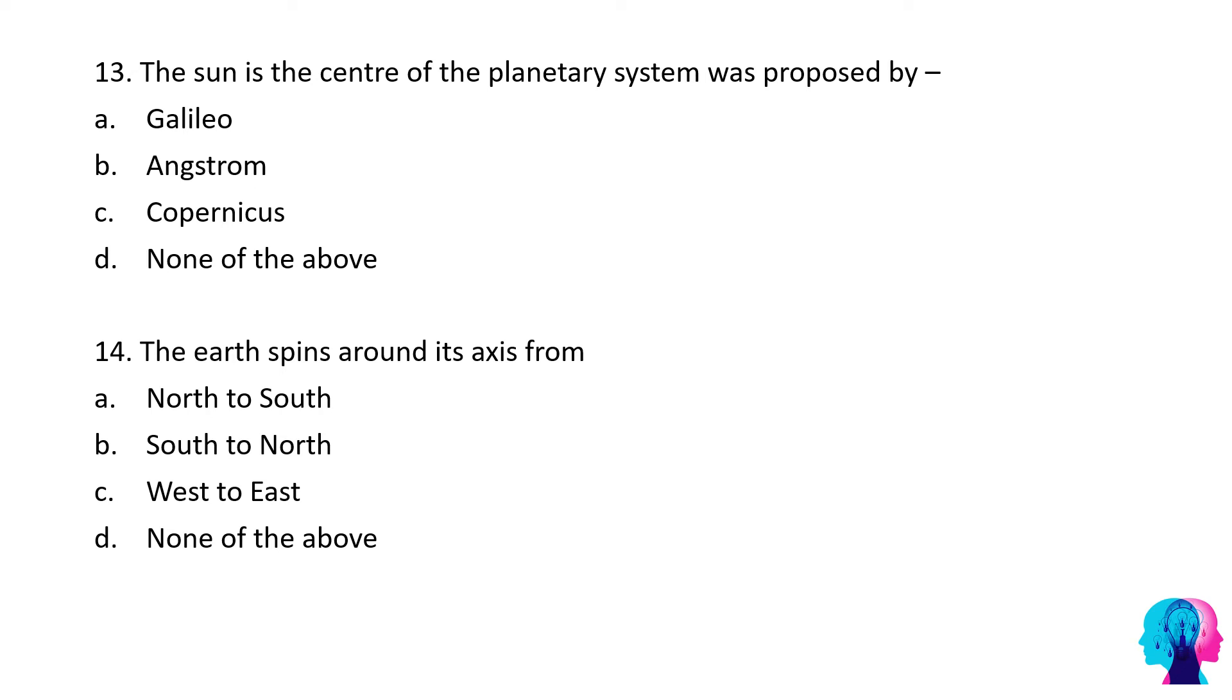The sun is the center of planetary system was proposed by Galileo, Angstrom, Copernicus, or none of the above? The correct option would be Copernicus. Nicholas Copernicus proposed that sun is at the center of the solar system with the planets orbiting it.